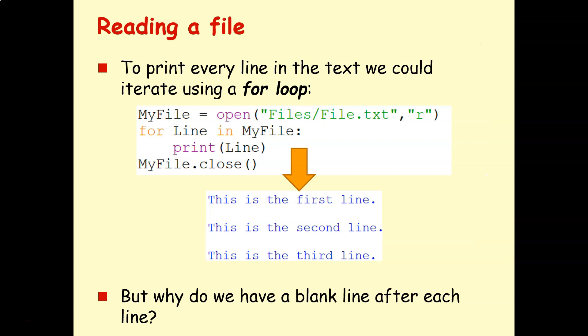So an easy way to do that is just iterate through the file object using a for loop. So myfile equals open file slash files.txt r for read mode. Then I say for line in myfile, print line, myfile.close. And all this is doing is saying go through that file line by line from the start to the end. And then I can print them out one at a time. And that will give me this output here.